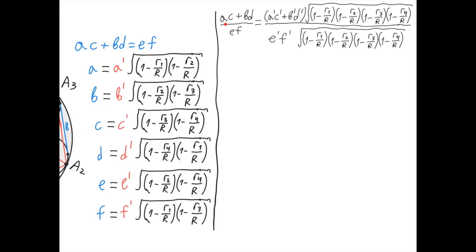Now let's consider the expression (AC plus BD) over EF and replace each of A, B, C, D, E, and F with the expressions from those equalities. In the numerator, A times C equals A' times C' times the square root of (1 minus R1 over R)(1 minus R2 over R)(1 minus R3 over R)(1 minus R4 over R). Similarly, B times D equals B' times D' times the same square-rooted expression. So that square-rooted expression is equal for both AC and BD.